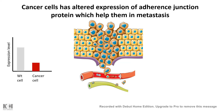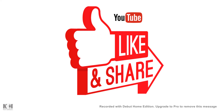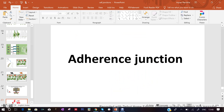This is how adherence junctions and cell junctions play a vital role in cellular morphogenesis, from brain development to cancer. If you liked this video, give it a thumbs up, don't forget to like, share, and subscribe, and let me know in the comments how you like my videos. Thank you.